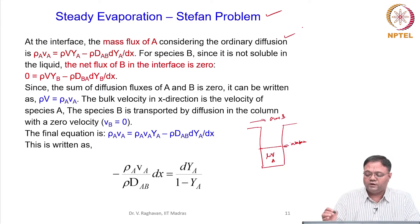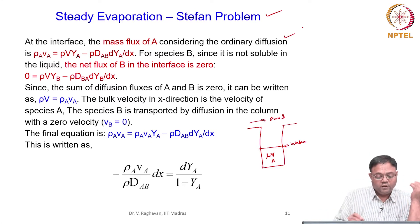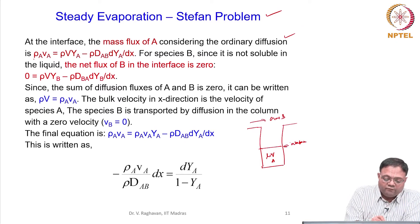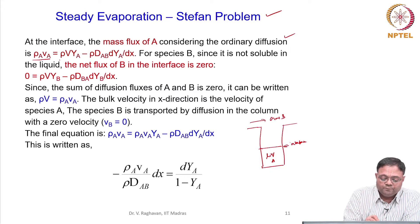Ordinary diffusion does not take into account thermal diffusion, which we will see later. This is given by Fick's law. The flux rho_A * V_A is the density of the vapour A into V_A, the velocity at that interface, into area. The flux means dividing by area, which will be equal to the convective flux.